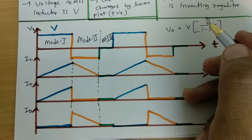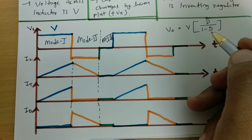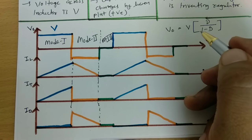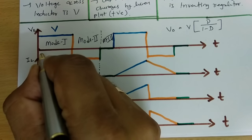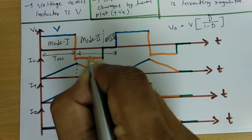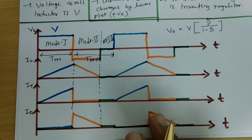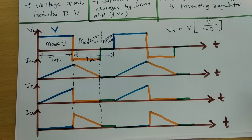If duty cycle is 0.25, then 0.25 divided by 0.75 equals Vs divided by 3 - that is lower than V, meaning it is buck converter behavior. And if duty cycle is 0.75, then 0.75 divided by 0.25 equals 3 times V - that is boost converter behavior. If you keep the T-on time period higher, you can have a boost converter. If you keep the T-on time period lower than 0.5, you can have a buck converter.